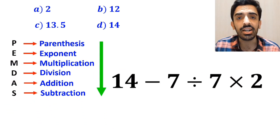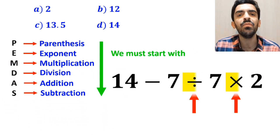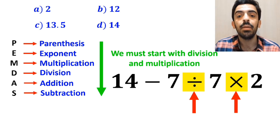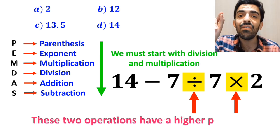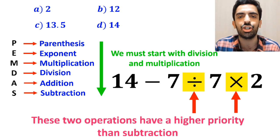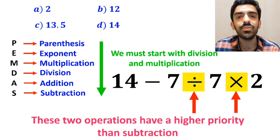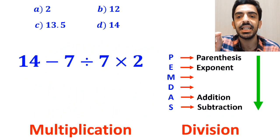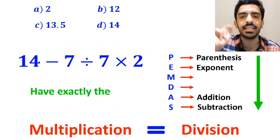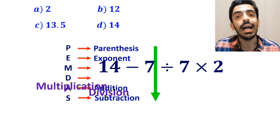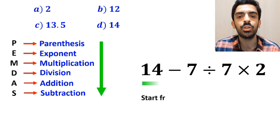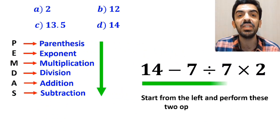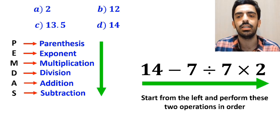According to the PEMDAS rule, we must start with the division and multiplication because these two operations have a higher priority than subtraction. However, it's very important to keep in mind that multiplication and division have exactly the same level of priority. In this situation, the best approach is to start from the left and perform these two operations in order.